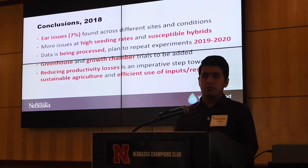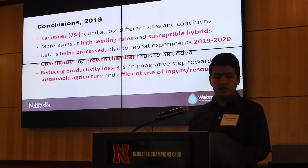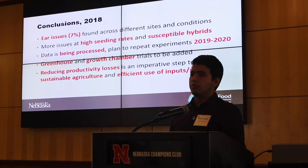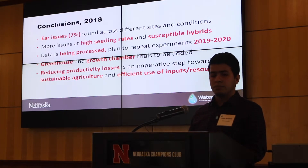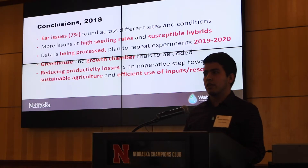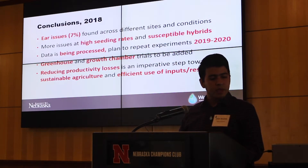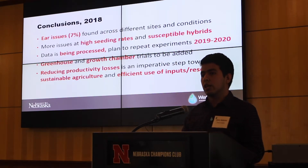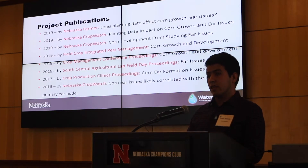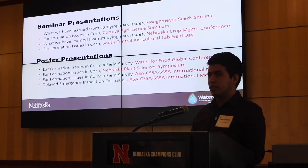Some of our conclusions: issues at a seven percent pressure were recorded in 2018. More issues were found at high seeding rates and at susceptible hybrids. Our data is still being processed and we plan to repeat these experiments in 2019 and 2020. Greenhouse and growth chamber experiments are to be added this year in order to better understand environmental and climatological conditions. We think that reducing productivity losses is an imperative step towards sustainable agriculture and more efficient use of inputs and resources in our systems. These are some project publications — mostly extension work.